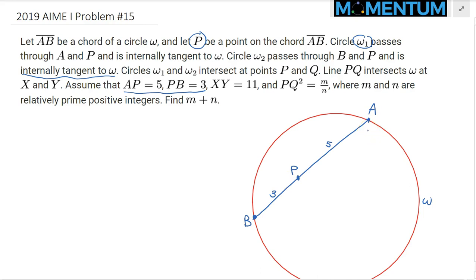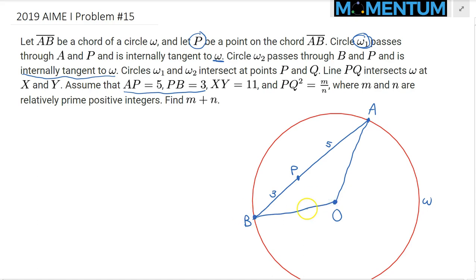How do you draw circles which are internally tangent? The easiest way is to first identify the center of the big circle omega — let's label this center as O. Because of the homothety between omega 1 and omega, the center of these internally tangent circles will be on line OA for omega 1, and similarly omega 2's center will be somewhere on OB.